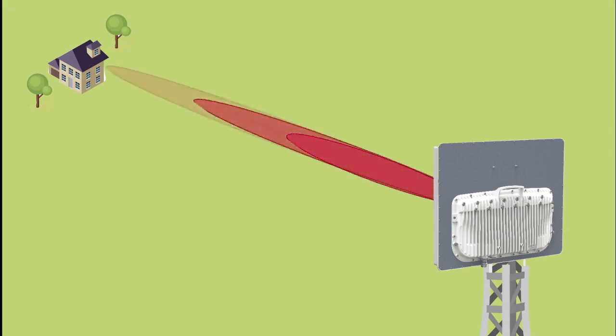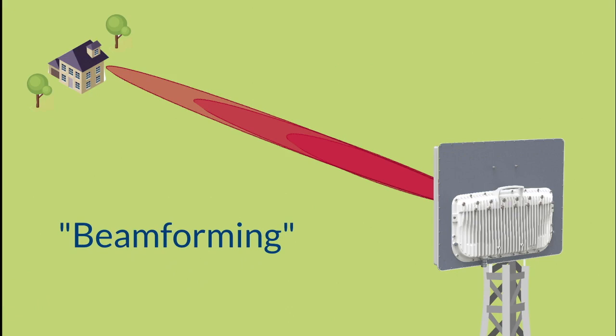When we separate or isolate the traffic for each subscriber, we use a concept called beamforming. In this process, the antenna array is focused and tuned to target a particular subscriber.